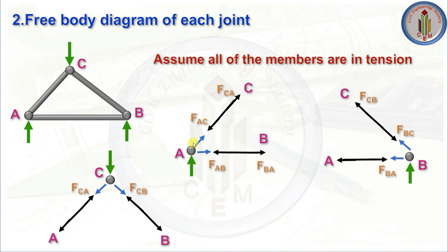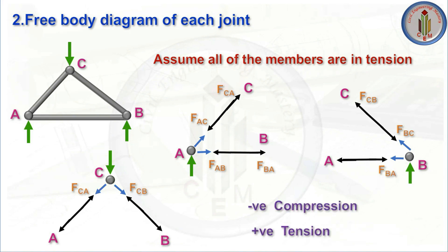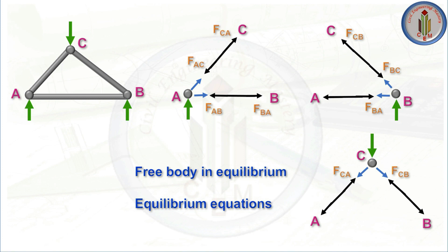Similarly, joint B has two members connecting to A and C, and joint C has two members connecting to A and B — all assumed in tension with forces acting away from the joint. Remember: negative value is compression and positive value is tension. The members carry only axial force, so we find the magnitude and determine whether each force is compressive or tensile.